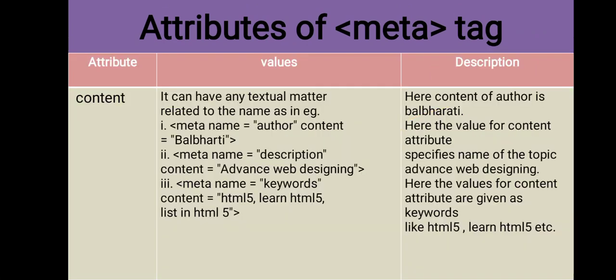The second attribute is content. It can have any textual matter related to the name attribute. For example, meta name equals author and content equals balbharti. The value for the content attribute specifies the topic, such as advanced web designing. Meta name equals keywords and content equals html5, learn html5, or list in html5.